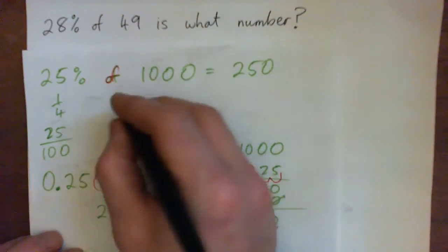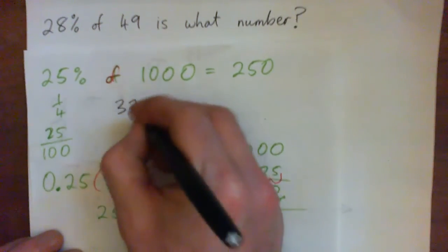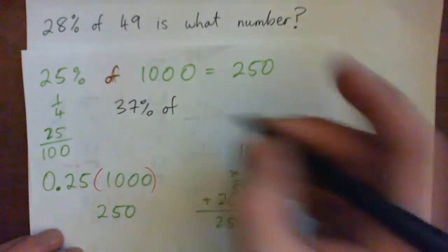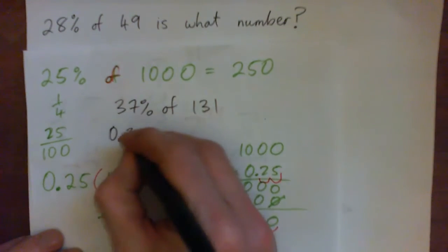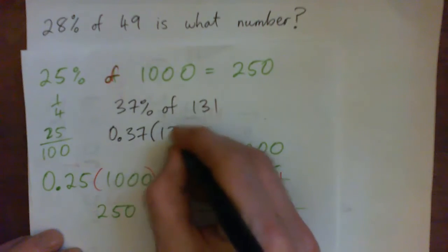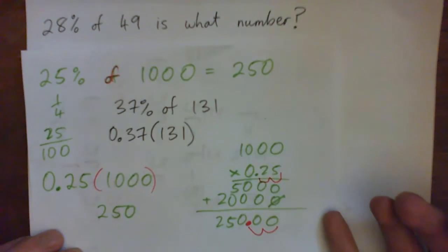Sure, so like 37% of 131, we would just turn this to a decimal, 0.37, and multiply that by 131. Does that make sense? Yeah, okay.